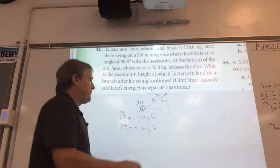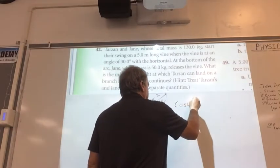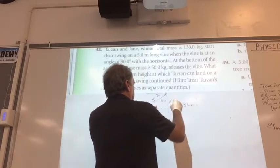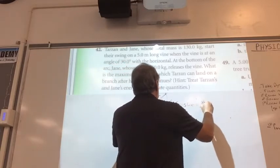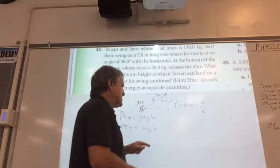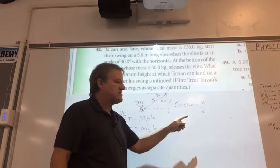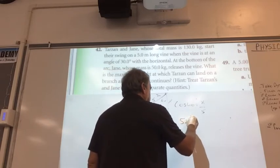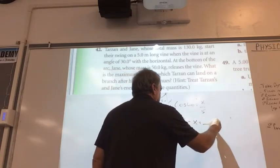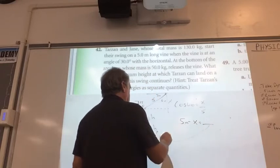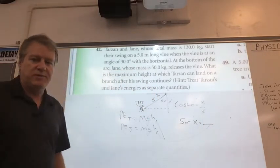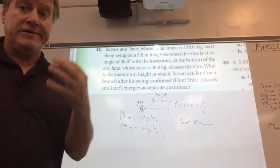Let's get the height using the same thing we did last time: the cosine function. The cosine of 60 equals the opposite, x, over the hypotenuse, which is 5. So 5 times the cosine of 60 gives us x. This rope is only 5 meters, so 5 minus x is how far they're dropping.